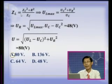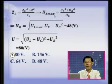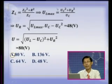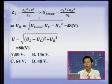Nhắc lại kiến thức để các em nhớ: L thay đổi để UL cực đại thì ZL = (ZC² + R²)/ZC; UL_max = (UC² + UR²)/UC, hay tính theo điện áp cả mạch: UL_max = U·√(ZC² + R²)/R. Đó là những công thức mà trong phần bổ trợ kiến thức trước đây thầy đã nhắc đi nhắc lại để các em nhớ và sử dụng giải những bài tập trắc nghiệm xuất phát từ những câu hỏi tự luận.